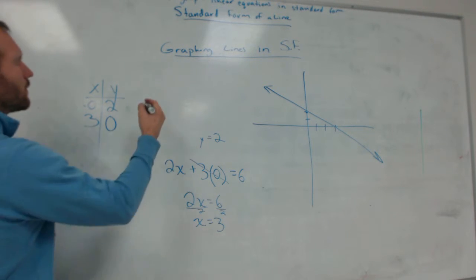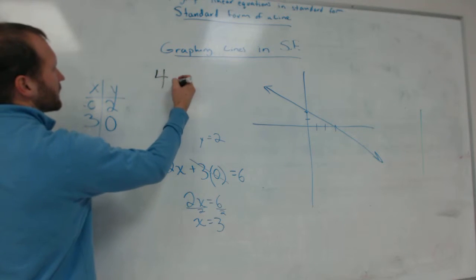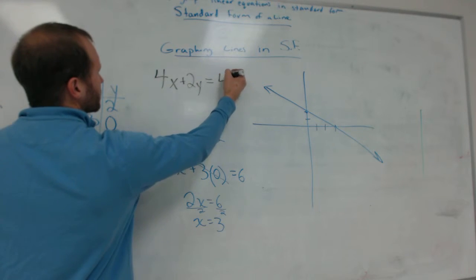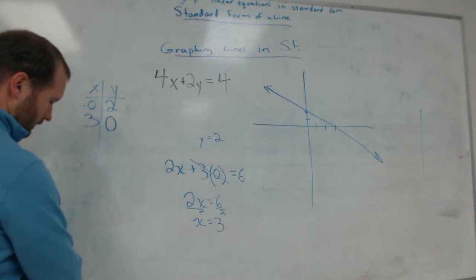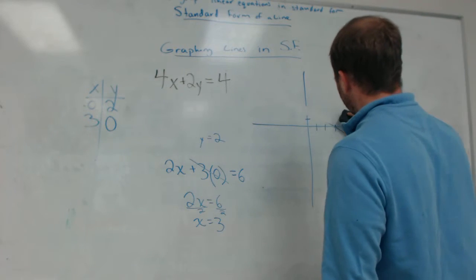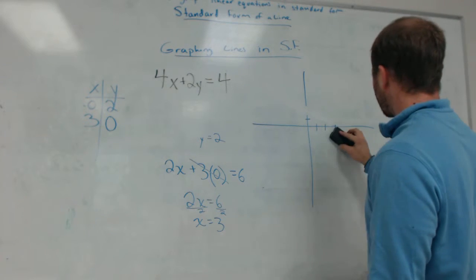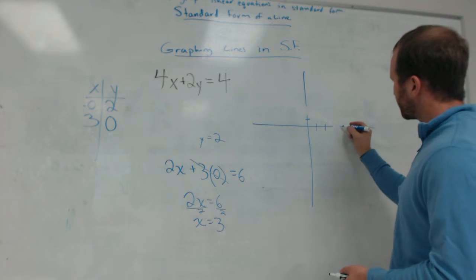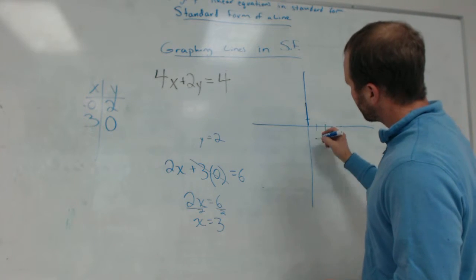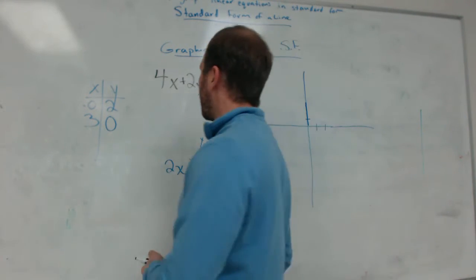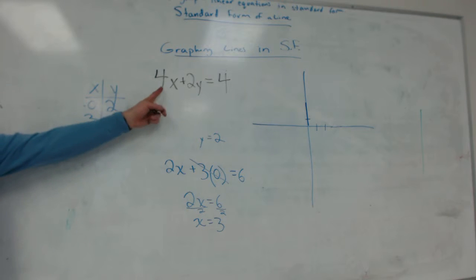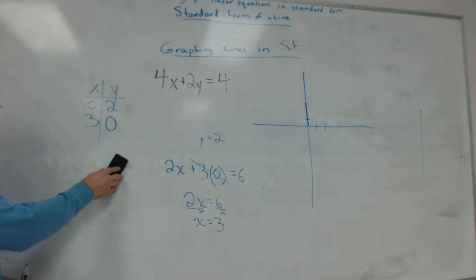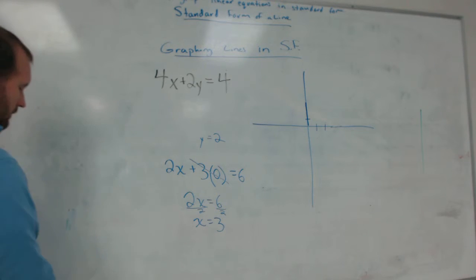Let's do this. So we have another equation. This time it says 4X plus 2Y equals 4. We're going to graph that. How do I start my graph? I'm going to make a T-chart. T-chart. Can I erase this T-chart? Yeah. Okay. So I'm going to make a new T-chart.